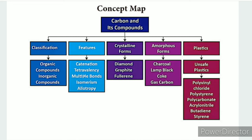So, C2H6O is a molecular formula that represents both alcohol and ether — that is isomerism, where compounds have different physical and chemical properties. Allotropy: crystalline forms include diamond, graphite, and fullerene, while amorphous carbon has a randomly arranged structure — charcoal is an example. In the next video, we will discuss the physical properties of carbon compounds. Thank you.